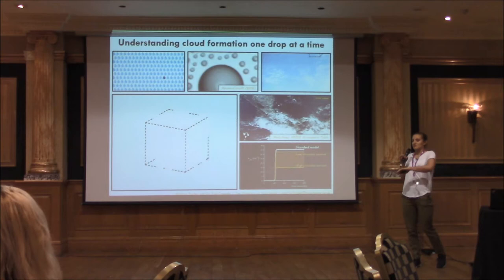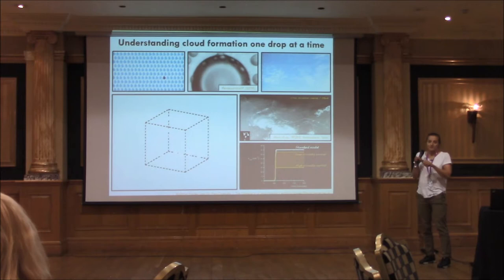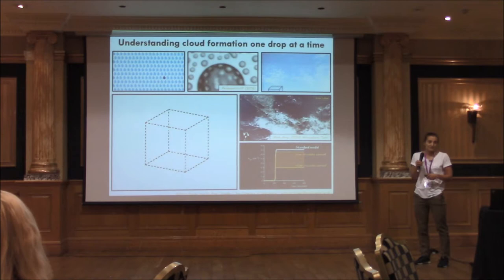Just a mixture of aerosols, typical of what you would find in the air around us. And then we lift it — we ascend it through the air. While we're doing that we're solving equations that solve for temperature, pressure, relative humidity and droplet growth. Through this we start to grow a cloud within our parcel.